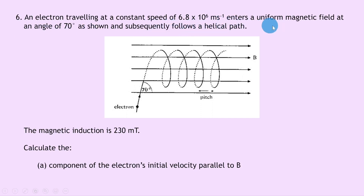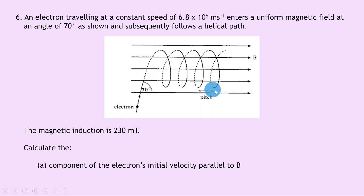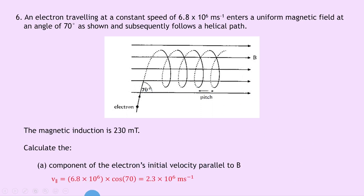Question six: an electron traveling at 6.8 times 10 to the 6 meters per second enters a uniform magnetic field at an angle of 70 degrees and follows a helical path. Magnetic induction is 230 millitesla. The velocity vector makes 70 degrees to the horizontal, with the magnetic field going to the right. Part a: calculate the parallel component of velocity. v parallel equals v cos theta = 6.8e6 times cos 70 = 2.3 times 10 to the 6 meters per second.